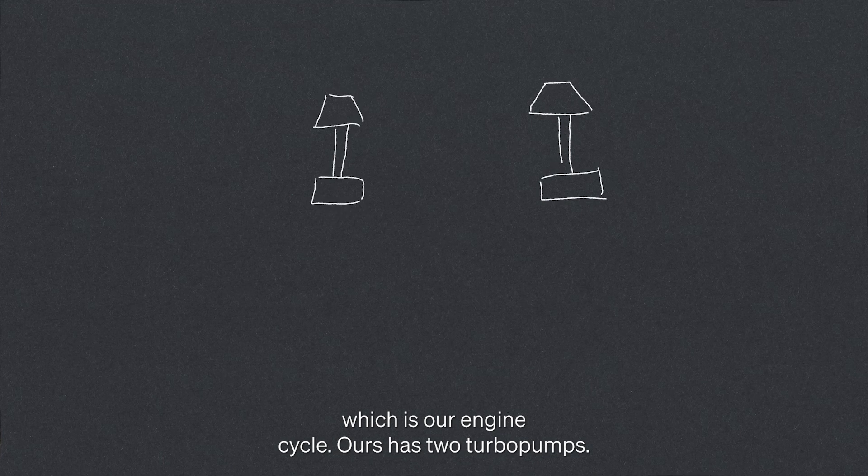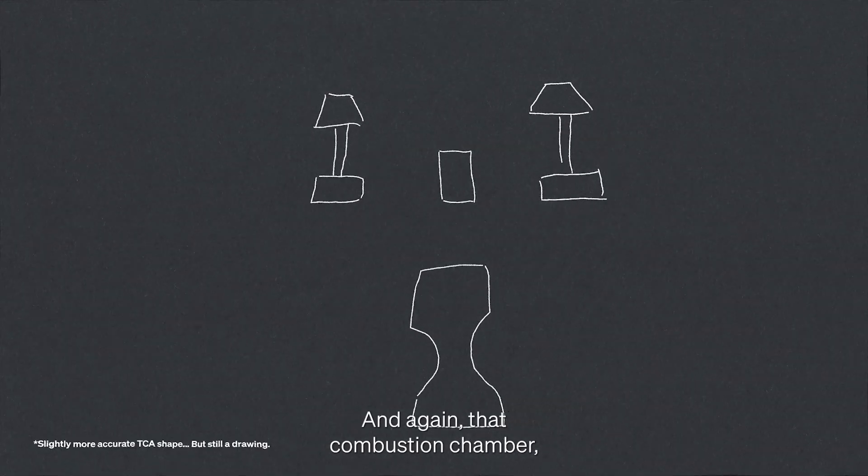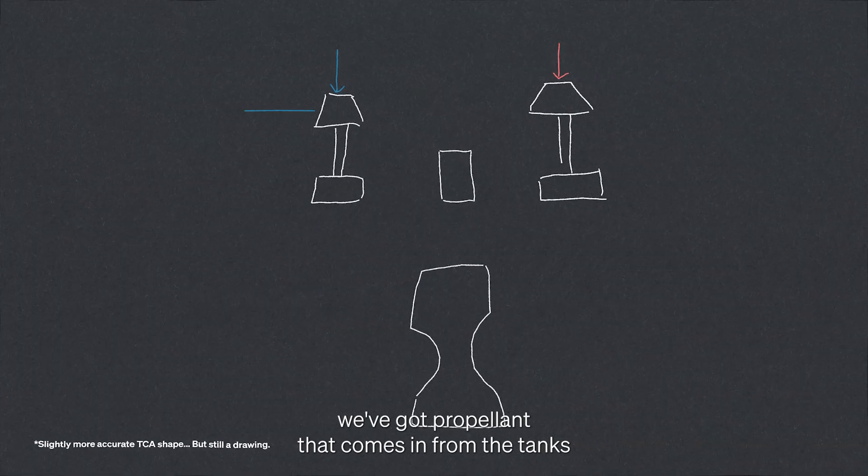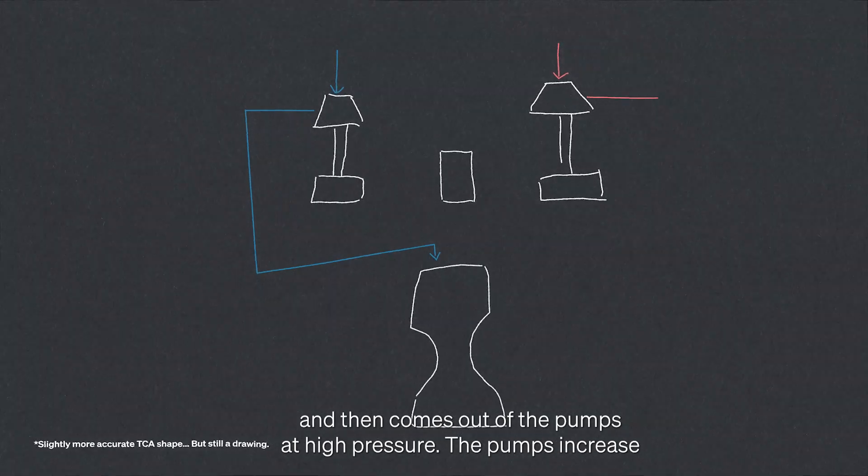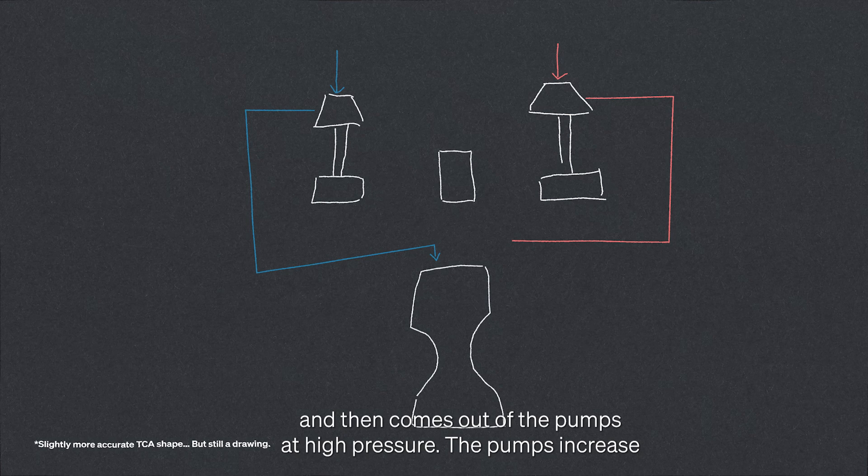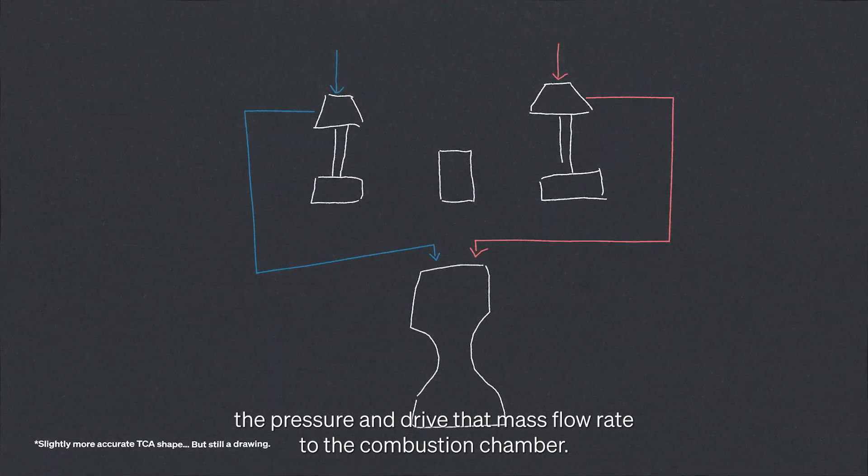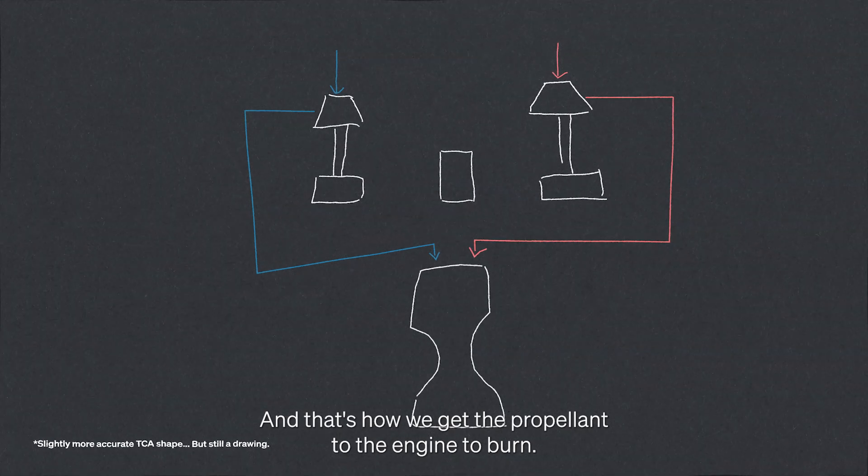Ours has two turbo pumps, a gas generator, and that combustion chamber. We've got propellant that comes in from the tanks and then comes out of the pumps at high pressure. Pumps increase the pressure and drive that mass flow rate to the combustion chamber. That's how we get the propellant to the engine to burn.